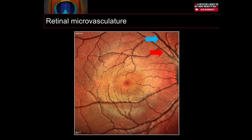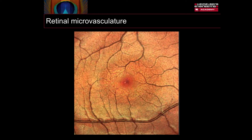With multicolour imaging it's possible to identify fourth and fifth order bifurcations in the retinal capillaries. If we zoom in, we start to appreciate the structure of the foveal avascular zone, although the foveal arcade cannot be clearly recorded.